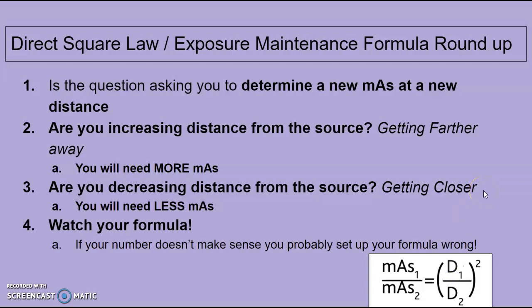All right, so direct square law, exposure maintenance formula. You might see it written as either one of those on your ARRT exam. But essentially, it's when the question is asking you to determine a new mAs and a new distance. Go basic. Are you increasing your distance from the source, which means getting farther away? You're going to need more mAs to reach that patient or reach that part. Are you decreasing distance from the source or getting closer? You're going to need less mAs. Just watch your formula. If your numbers don't make sense, then you probably set up your formula wrong. You probably put the distances flipped or something like that. So just make sure you're using the correct formula. Hope that helps.